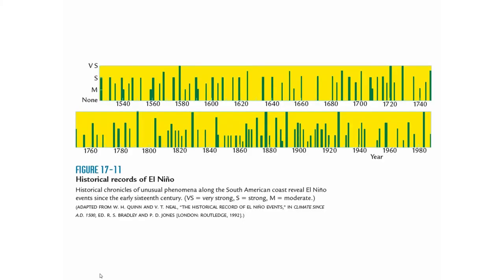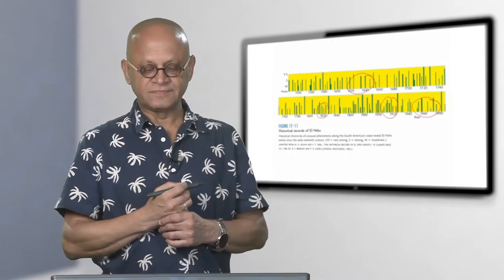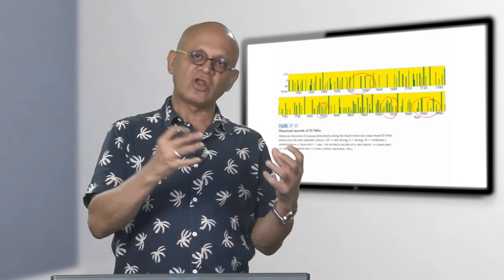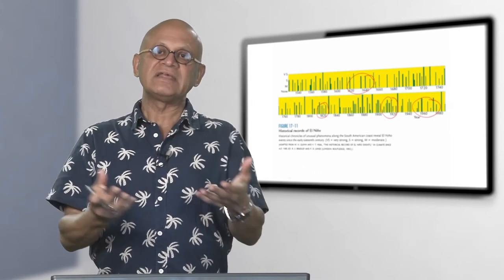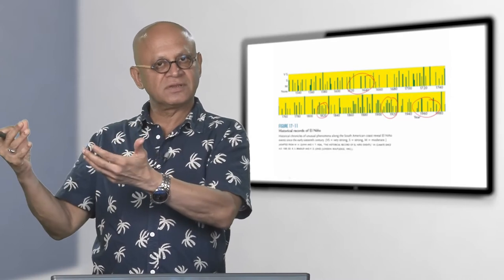Here is a historical record of El Niños since the 1500s. There have been many — they occur very frequently — but we will see again and again that there are times when there are more El Niños and times when there are fewer. There are definitely decades where there are more El Niños and decades where there are fewer. That means there are decades when the ocean is picking up a lot of heat, and decades when the ocean is spitting heat back into the atmosphere — and you can clearly see this trend in the atmospheric temperature.